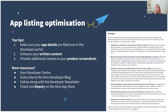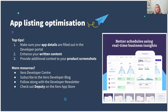Number three: provide context to your screenshots. Customers viewing your app may not be familiar with your product. While screenshots are really helpful, without any context they can feel a little bit overwhelming. I suggest adding a branded background to your screenshots and including key callouts that highlight the key benefits of each view. Deputy has done a really good job of this — for example: 'get better schedules using real-time business insights' with matching product screenshots. For more resources, jump onto the Xero Developer Center, subscribe to the developer blog, or follow along in the developer newsletter. I'd also really recommend jumping onto the Deputy App Store listing on the Xero App Store.